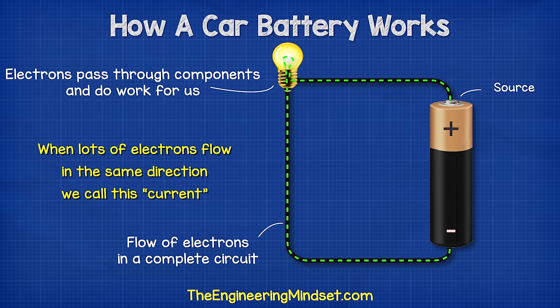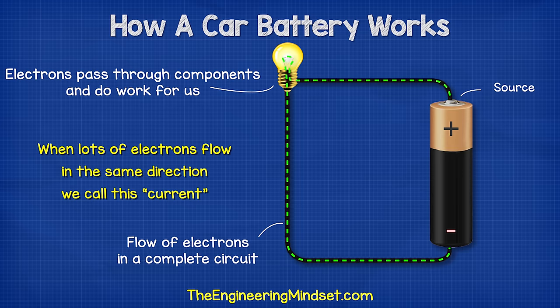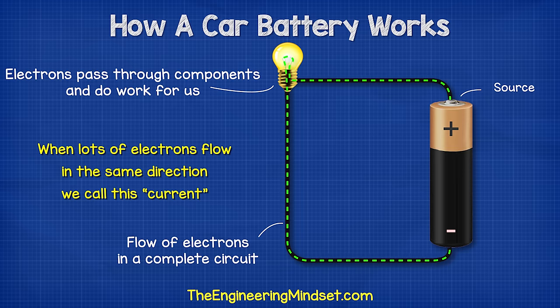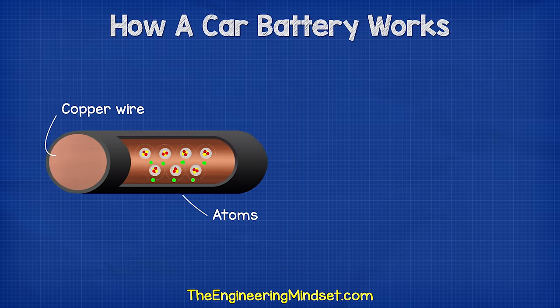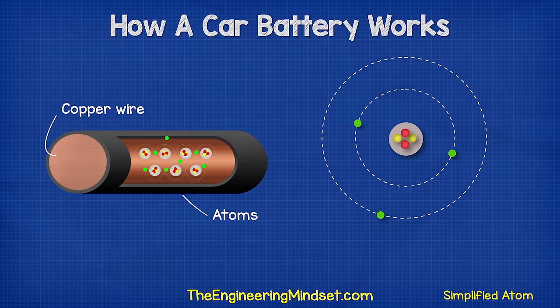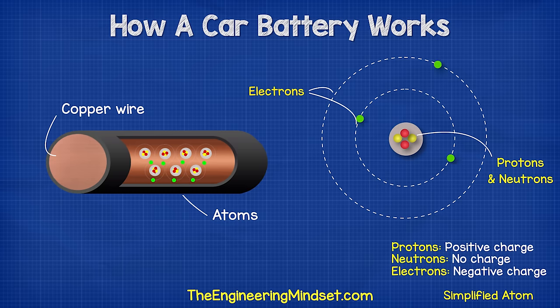When lots of electrons flow in the same direction we call this current. Every material is made from atoms. The atoms have different numbers of protons, neutrons, and electrons, which is what makes them a different material.